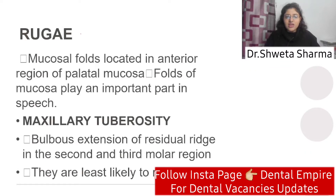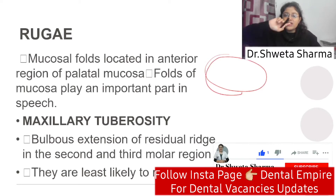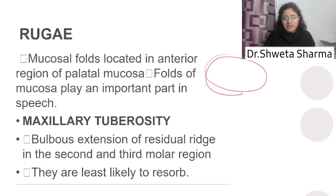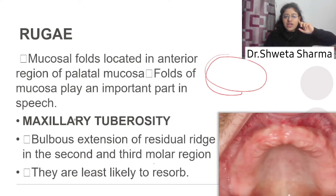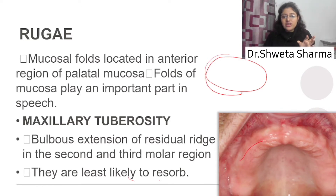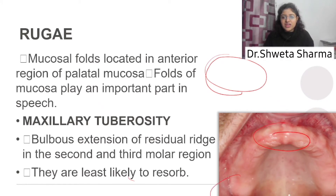Now what is the secondary stress bearing area? The ridge is in the anterior region of the palate. The crest of the ridge can also factor in, and there is a mucous ridge. Rugae in mucosa play an important part in speech and help support the ridge. Second is the maxillary tuberosity. Generally, the residual ridge is a result of bone resorption. These are the four stress bearing areas.